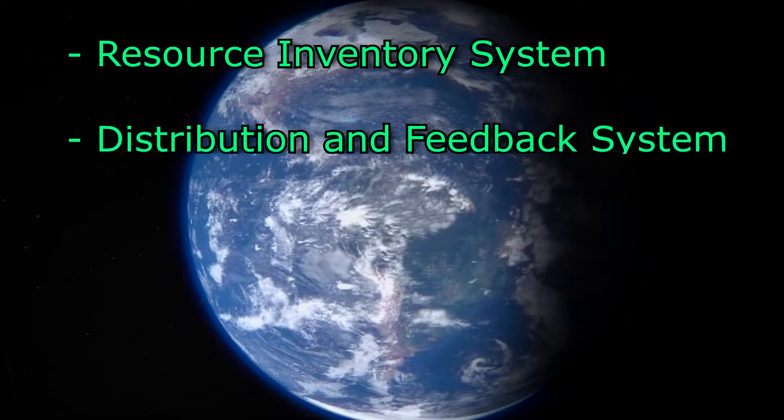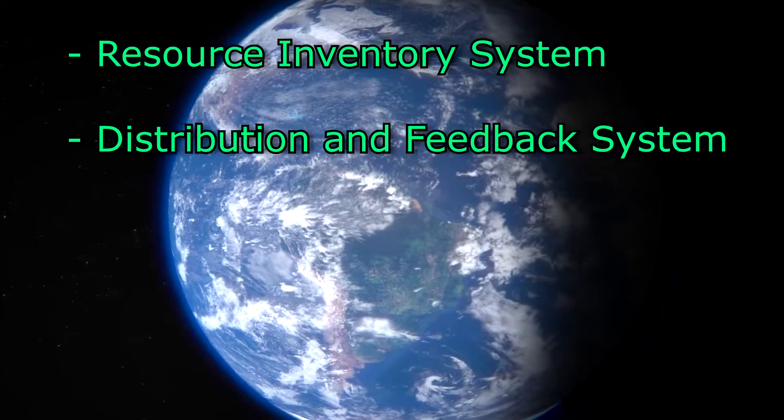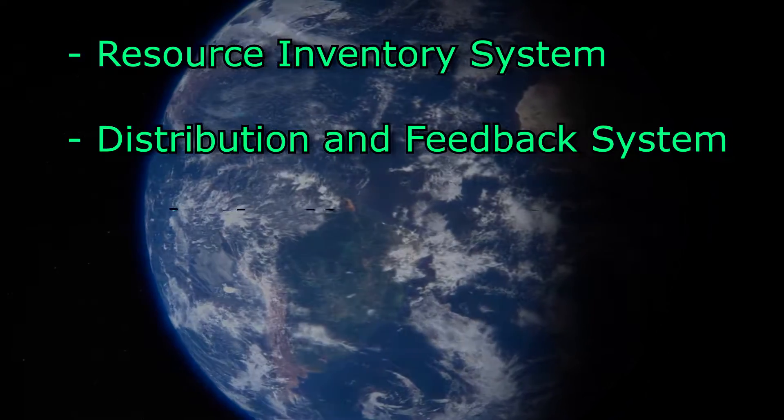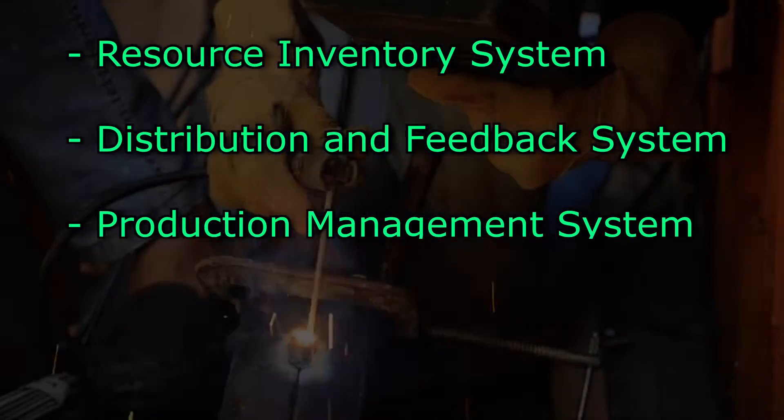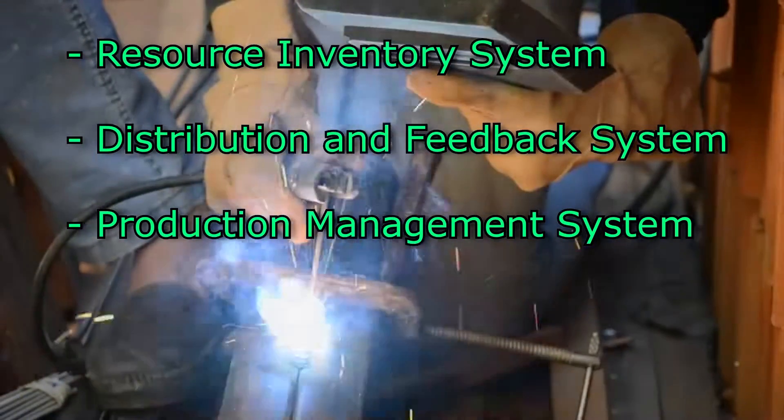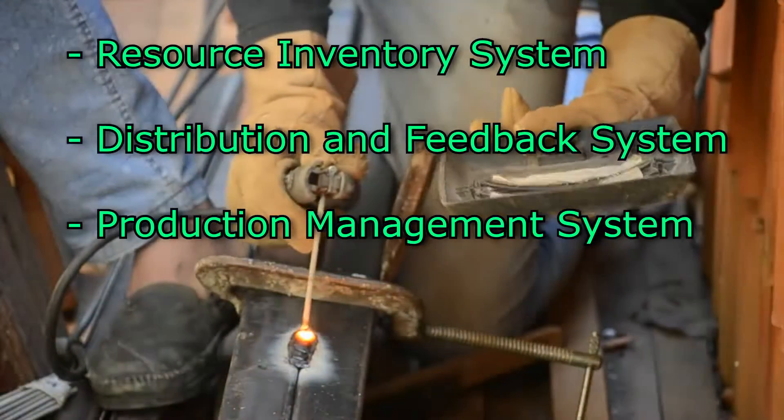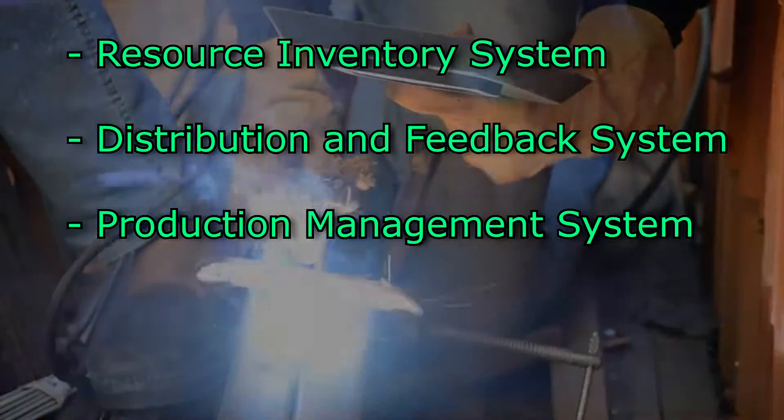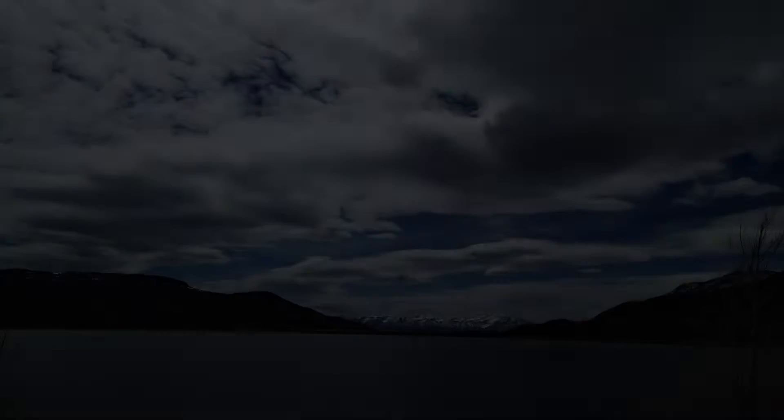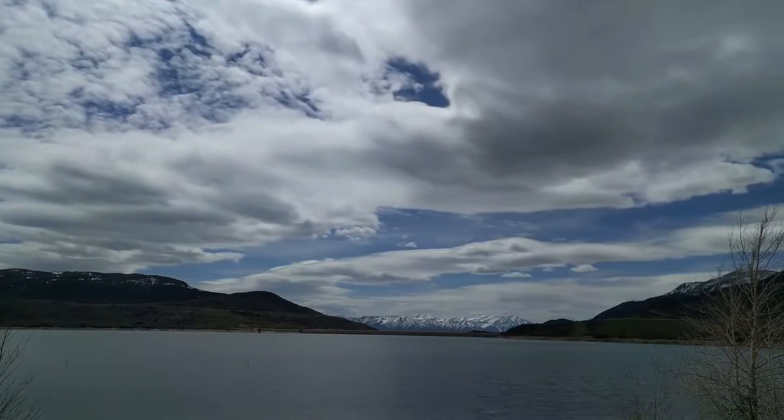A distribution and feedback system that would gather data about demand for goods and services and distribute such. And a production and manufacturing system that would use information gathered from both the aforementioned, in order to work out what to produce, how much to produce, and how to produce it using what resources.